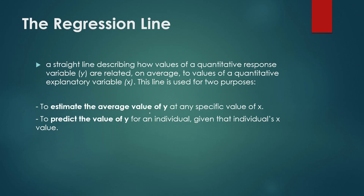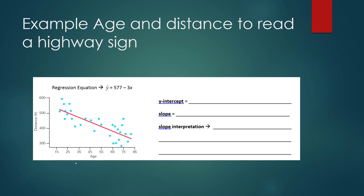The regression equation creates what's called a regression line — a straight line describing how those two quantitative variables compare to each other. It can be used to either estimate an average value of y at a specific value of x, or it can predict a value of y for one individual. The format you use is the same; you just talk about it in these two separate ways.